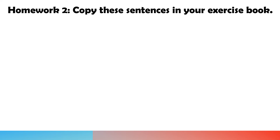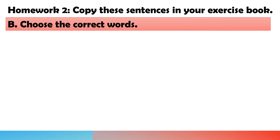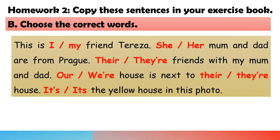Homework 2: Copy these sentences in your exercise book and choose the correct words. 1. This is I/my friend Teresa. 2. She/her mom and dad are from Prague. 3. They are/their friends with my mom and dad. 4. Our/we house is next to their/there house. 5. It's/its the yellow house in this photo.